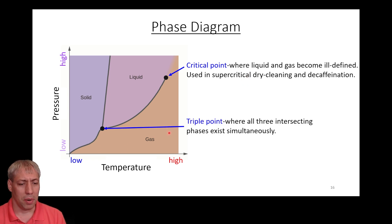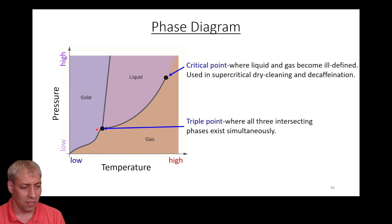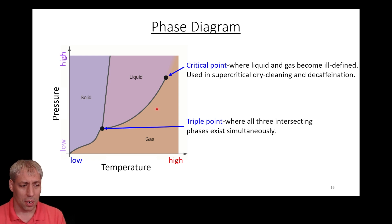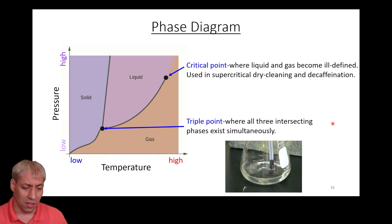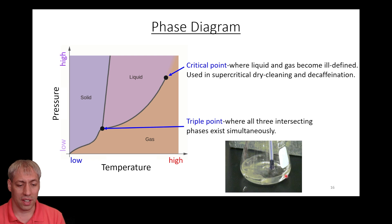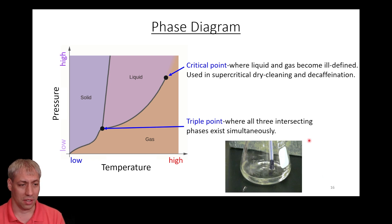We also have a triple point — basically where all three transition lines intersect. At this triple point, all three phases exist simultaneously. You have to find a very particular temperature and pressure, but when you hit it, you'll see solid, liquid, and gas all at once. To have all three exist simultaneously it only occurs at that very specific temperature and pressure — if either changes, it's no longer the triple point. Here's a quick video showing water both boiling and freezing simultaneously at the triple point.